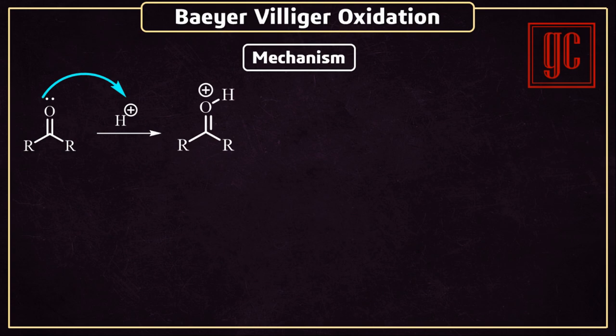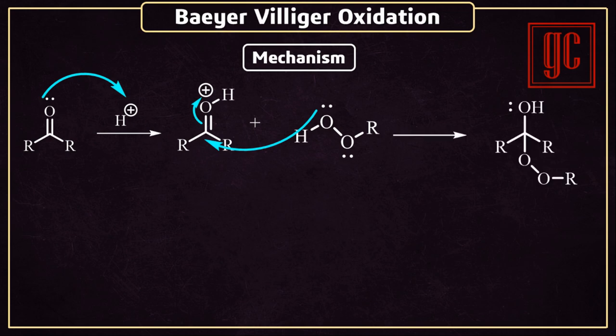Now this molecule reacts with peracids. Here, the lone pairs of the peracid act as nucleophile and attack on the carbonyl carbon. As a result, the pi electrons of the carbonyl group are rearranged, and carbon-oxygen bond formation takes place.